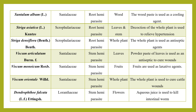Striga densiflora — the whole plant is used as an antiseptic agent. Viscum articulatum — powder paste of leaves is used as antiseptic to cure wounds. Viscum orientale — the whole plant is used to cure cattle wounds. Dendrophthoe falcata — aqueous juice is used to kill intestinal worms.